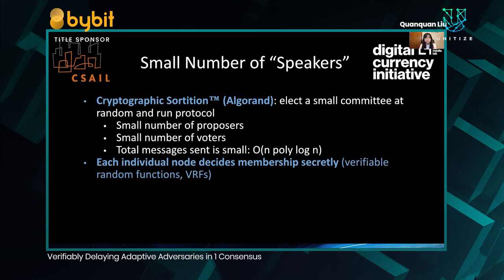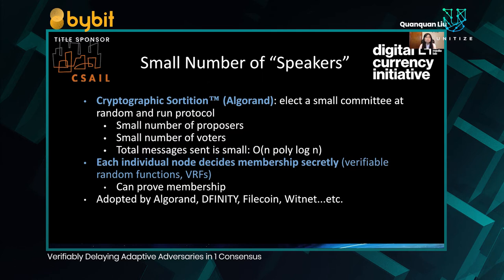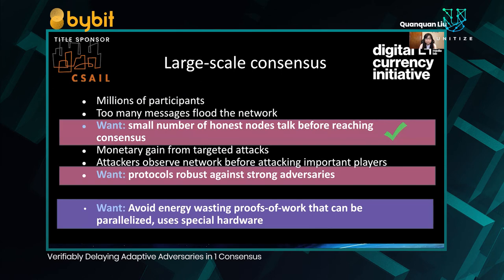Another important characteristic of cryptographic sortition is that each individual decides committee membership secretly. This can be done via cryptographic primitives called verifiable random functions, or VRFs. Although membership is decided secretly, committee members can inform others and prove their membership later on. Such ideas are used in a variety of cryptosystems including Algorand, Dfinity, Filecoin, Witnet, and others. Thus, cryptographic sortition allows us to satisfy our first desirable property.